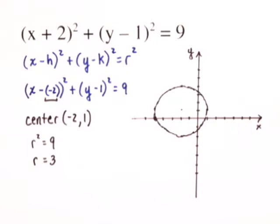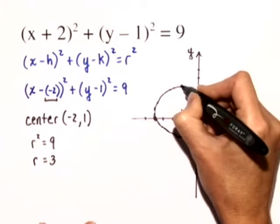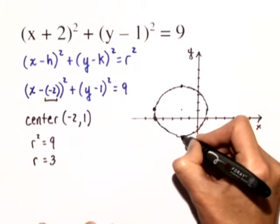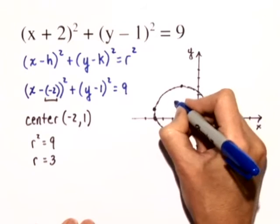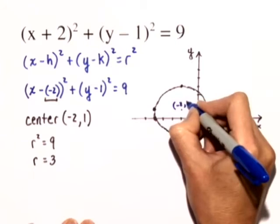Okay, let's look at what these points are that I used. That will help me determine the domain and the range. Now remember, my center here is at negative 2, 1.